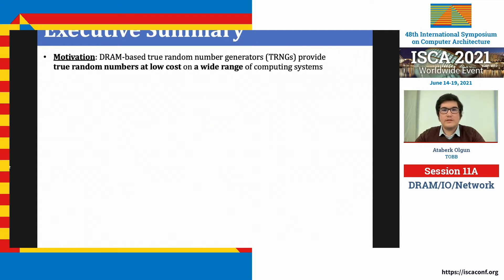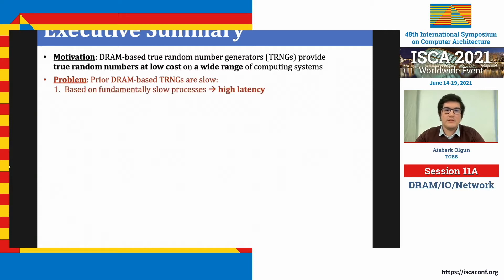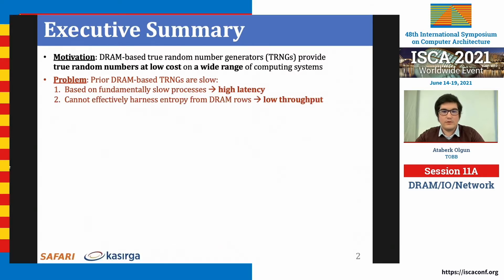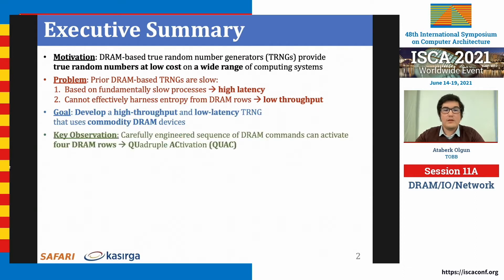DRAM-based true random number generators can provide low-cost true random number generation to a variety of computing systems. However, prior DRAM-based TRNGs are slow — they either sample fundamentally slow physical processes or cannot effectively harness entropy from DRAM rows. We make the key observation that a carefully engineered sequence of standard DRAM commands can activate four consecutive DRAM rows in quick succession. We call this new phenomenon quadruple activation, or QoAC for short.